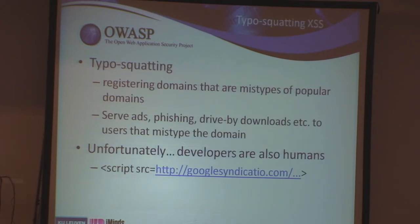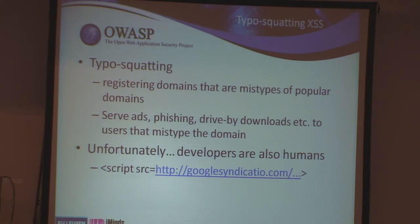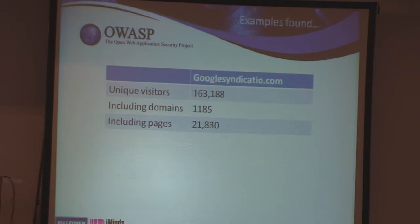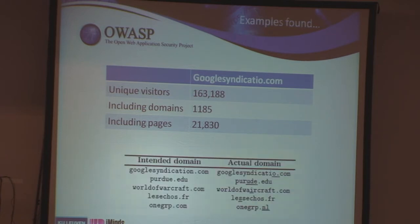The second attack is based on typosquatting. Users behind the browser are human, and so are developers — they can make mistakes too. For instance, with Google Syndication, a developer forgot the N in the domain name, redirecting to a domain that doesn't exist. By registering googlesyndication.com and running it for two weeks, it turned out about 1,200 domains were making that same mistake and including JavaScript from that typosquatted domain — possibly due to a copy-paste error on a wiki or blog. We actually could have served about 160,000 malicious JavaScript requests if we had wanted to.